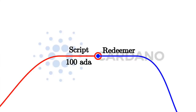The next question is what exactly does that mean — what context does the script have? One option is that all the script sees is the redeemer, and that is what Bitcoin does. In Bitcoin, there are smart contracts — they're just not very smart — called Bitcoin Script. Bitcoin Script works exactly like this: there's a script on the UTXO side and a redeemer on the input side, and the script gets the redeemer and can use it to decide whether it's okay to consume the UTXO or not.